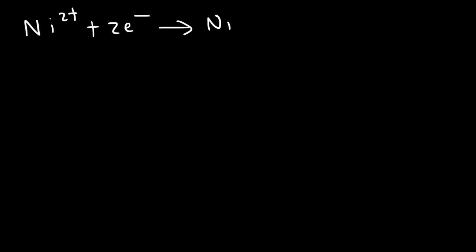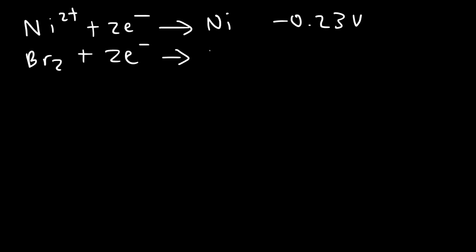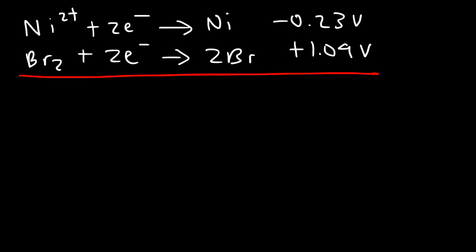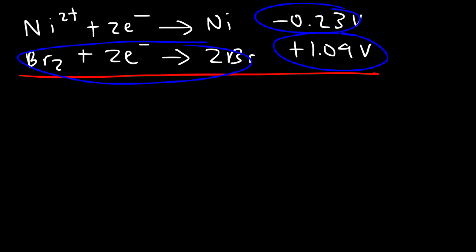Now let's work on another example using two given reduction potentials. We need to identify which reaction is oxidation and which is reduction. For a galvanic cell the cell potential must be positive, so we adjust reactions such that the overall cell potential is positive, with electrons on opposite sides of the two half reactions. If we reverse the second reaction it gives negative 1.09 V, and adding negative 0.23 V won't yield a positive cell potential, so we reverse the first reaction instead.